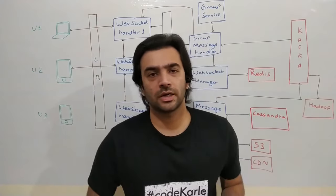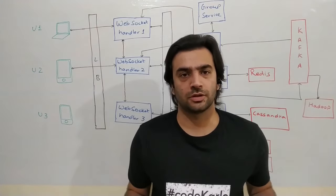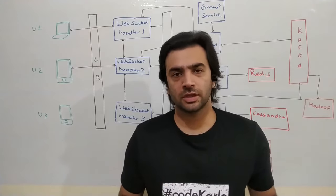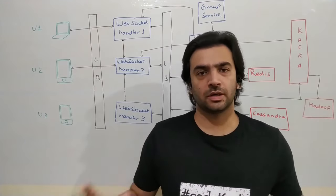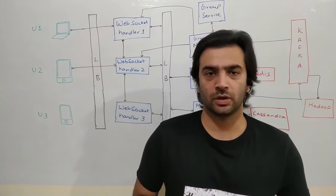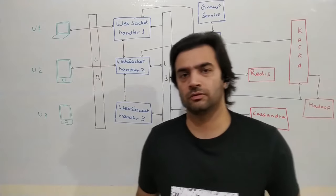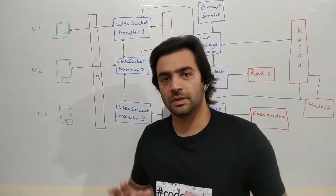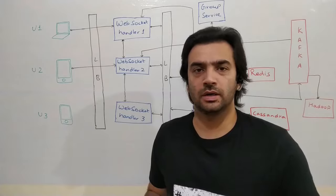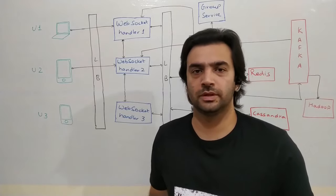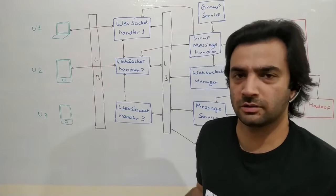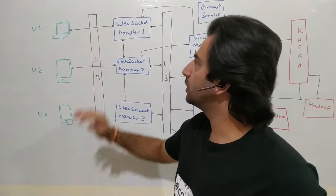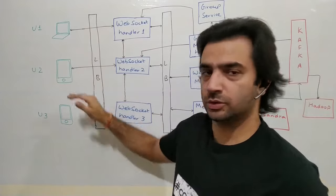Let's look at the overall architecture of the whole system. We'll start with the chatting solution and then look at other pieces that surround it. All the things you see here are user devices — could be mobile phones, web browsers, wearable devices like smartwatches — and let's say user1 wants to send a message to user2.